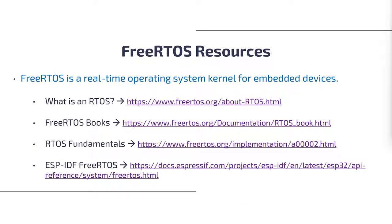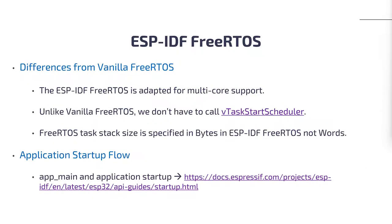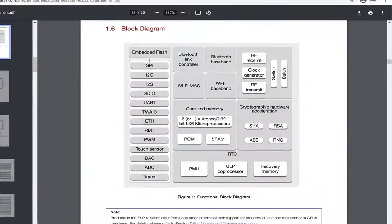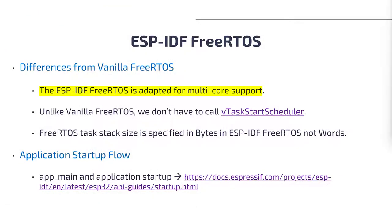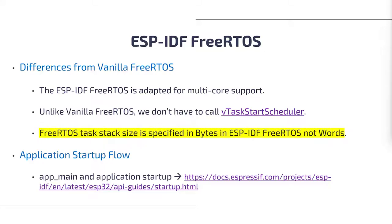Additionally, you can find extensive documentation about their version of FreeRTOS by following this link. There are a few apparent differences between the ESP-IDF FreeRTOS and the regular or vanilla FreeRTOS that affect our application development. The ESP32's Xtensa MCU contains two Xtensa processor cores, and the ESP-IDF uses its own version of the Xtensa port of FreeRTOS which provides multi-core support. Also, we do not have to call the vTaskStartScheduler API when using the ESP-IDF FreeRTOS, and the task stack size is specified in bytes, not words as with regular FreeRTOS.